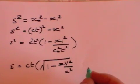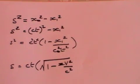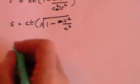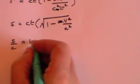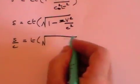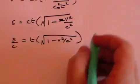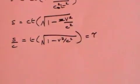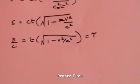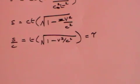Dividing both sides by c, s over c equals t times the square root of 1 minus v squared over c squared. And that we call tau — the proper time. It is the time which is invariant. Since s squared is invariant, then s divided by c must also be invariant, because c is a constant term.